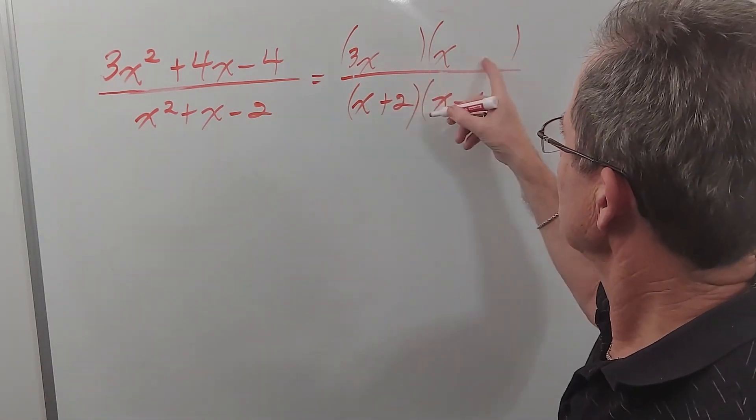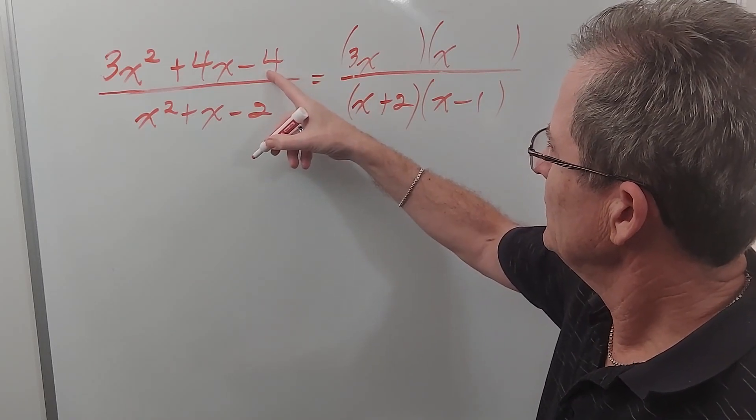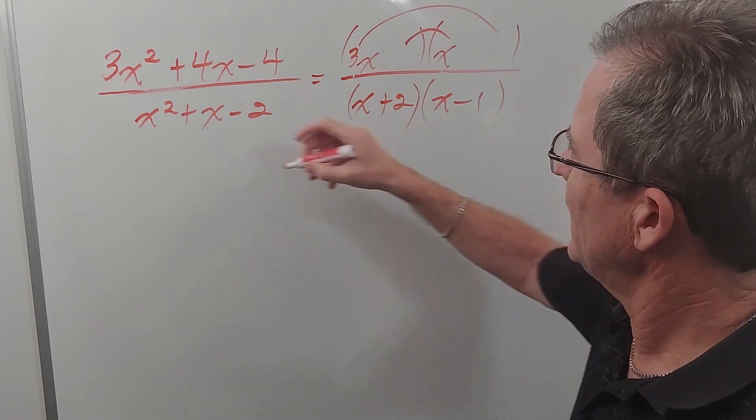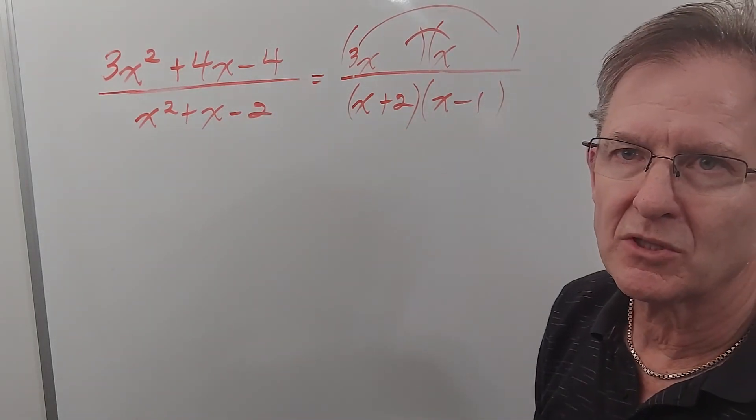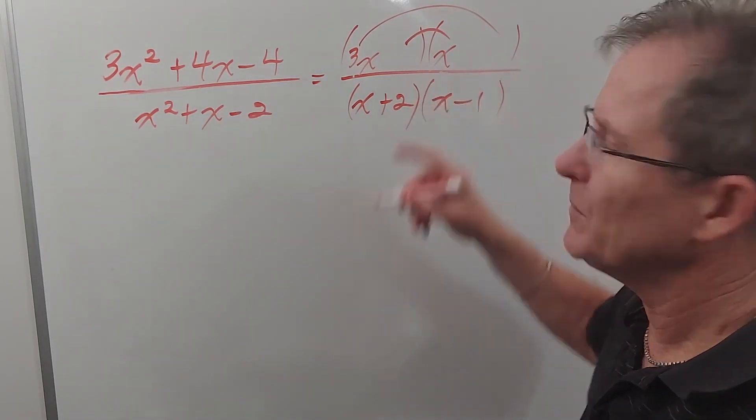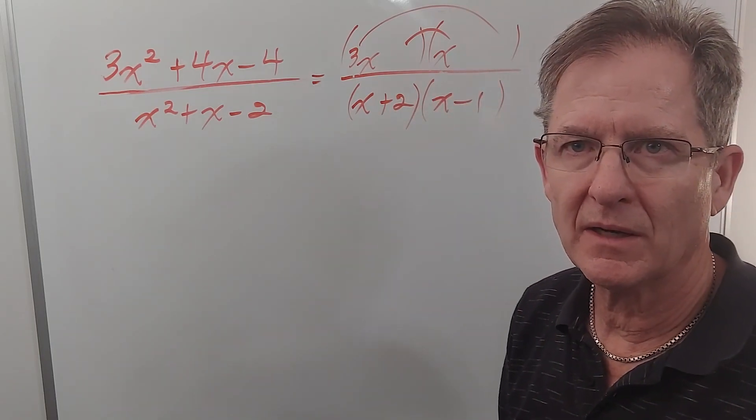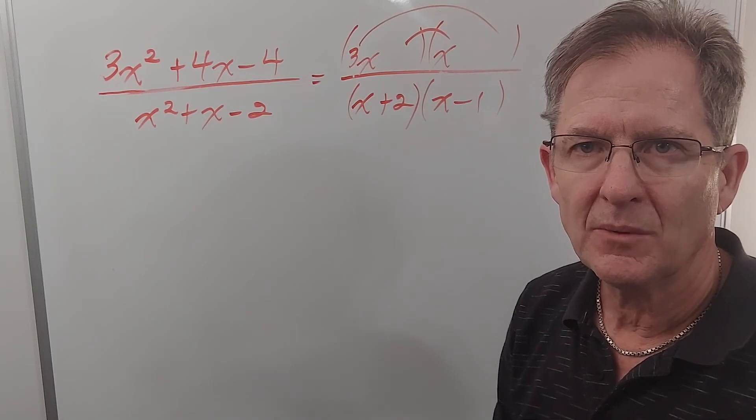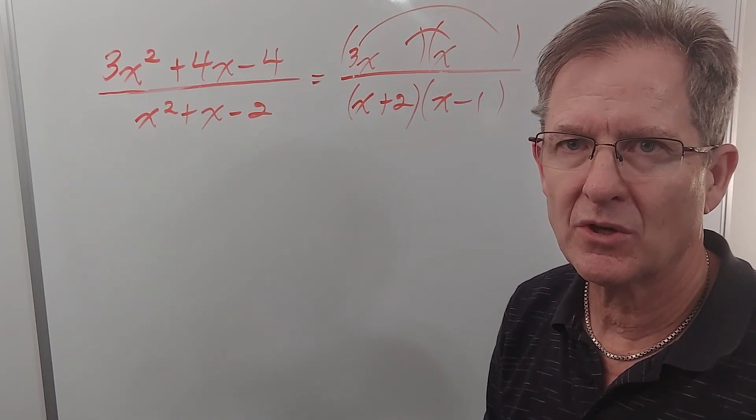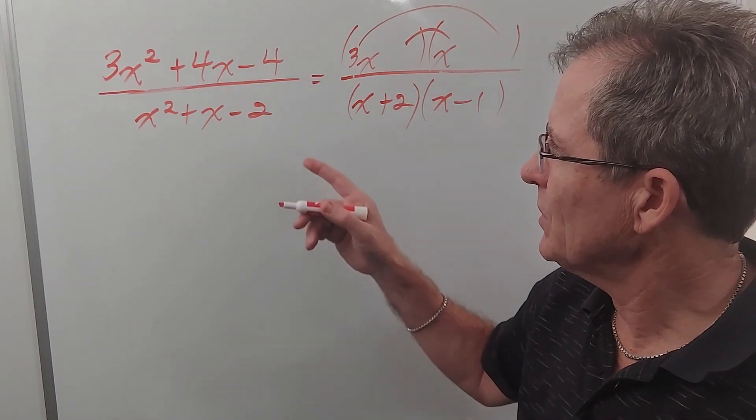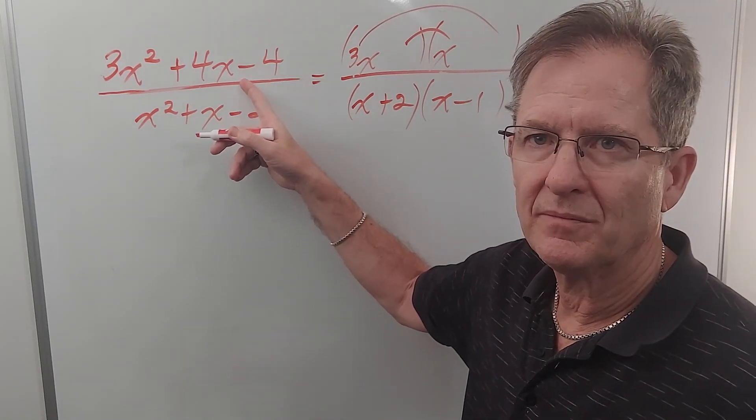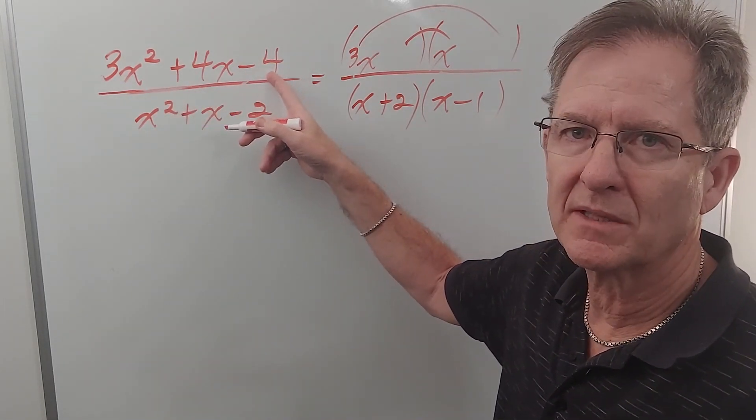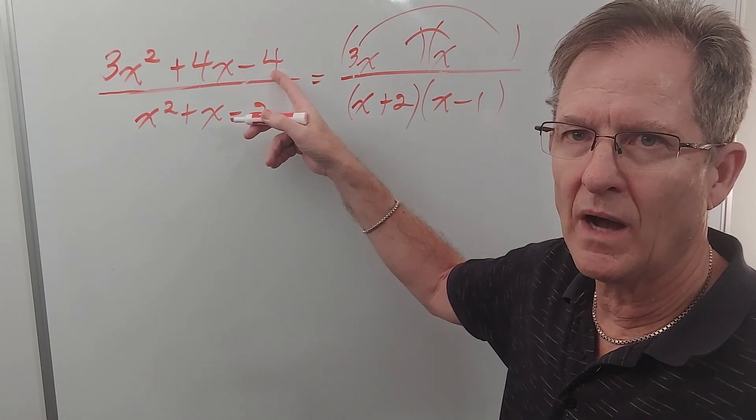And then these two numbers have to multiply to negative 4. But not only that this times this and this times this has to add up to 4x. That's where it becomes a bit tricky. You can guess those numbers by trial and error until you get the right answer. There's a method called the Australian method which is very useful but it doesn't really show you what's going on. So I'm going to show you the method of decomposition to factor this complex trinomial because it shows you why it's working.